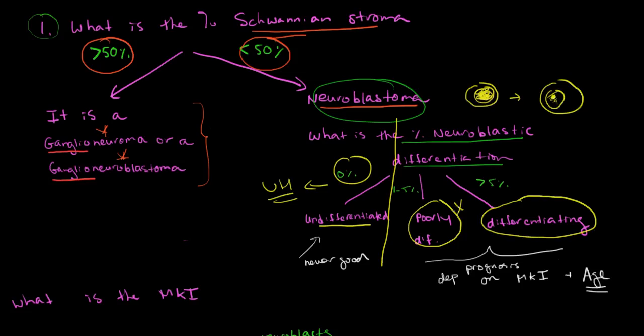And once you've established that you have one of these two, that's where Dr. Shimada says you can't tell whether the patient will do well or not until you know the patient's age and until you ask one more question. So the third question that Dr. Shimada tells us to ask is, what is the mitotic karyorectic index?